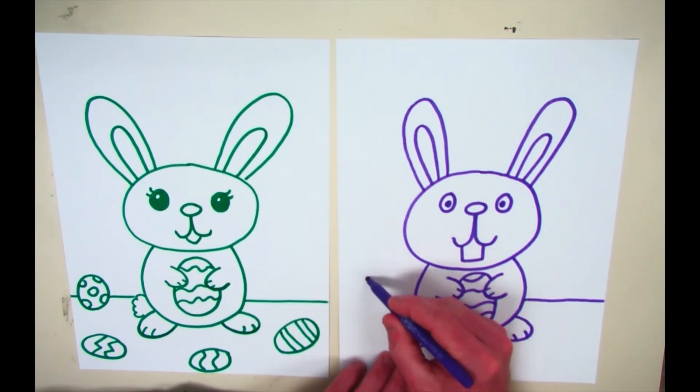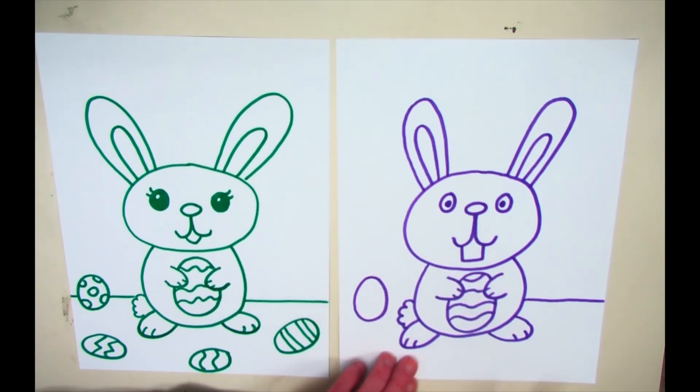If you want to put an egg that's standing up over here, like I did, you can, or you can put your eggs in different places. Now this line, just like the egg line went behind the hand, we're going to put this line behind the egg.